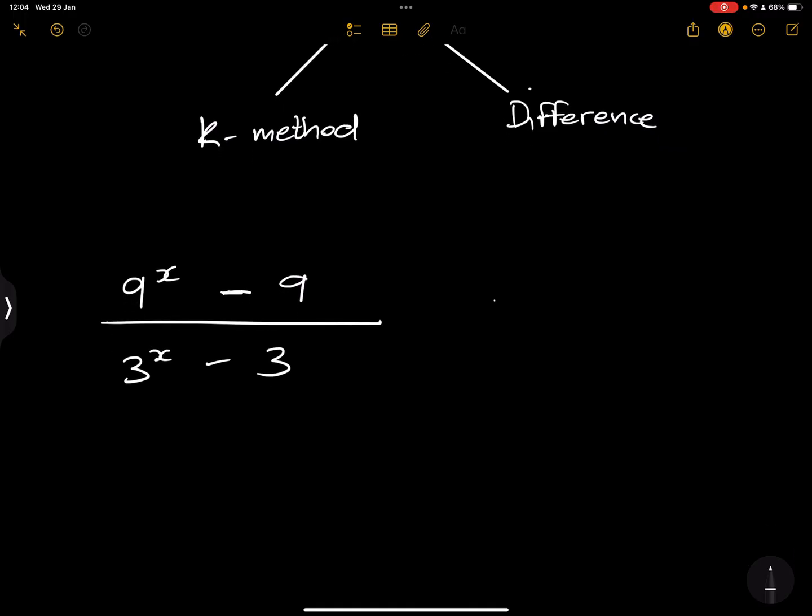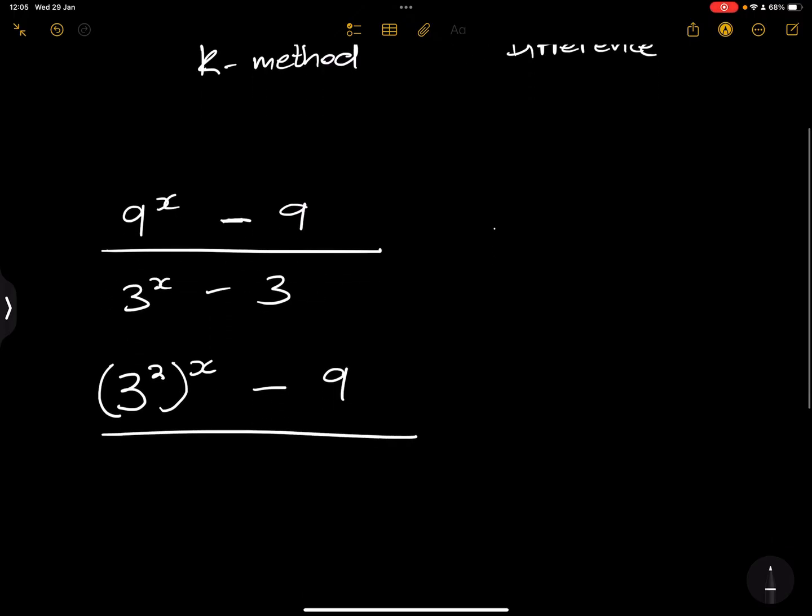So we know that 9^x can actually be written as 3 squared raised to the power of x minus 9. I'm just going to leave that as 9, and this is now going to be 3^x minus 3. Now when you look at this, it might look as though we don't have a common factor in this particular case. And yes, I agree, we probably don't. However, remember...